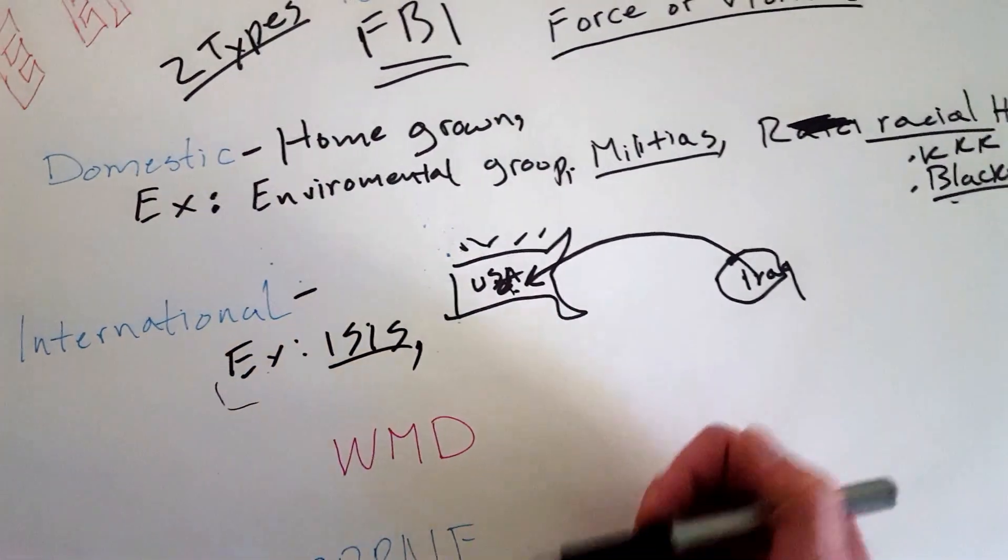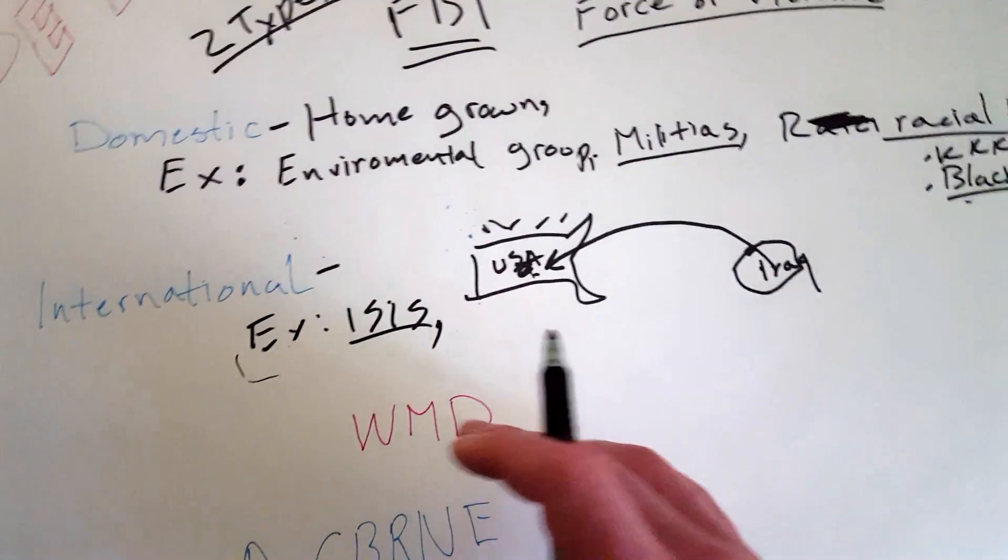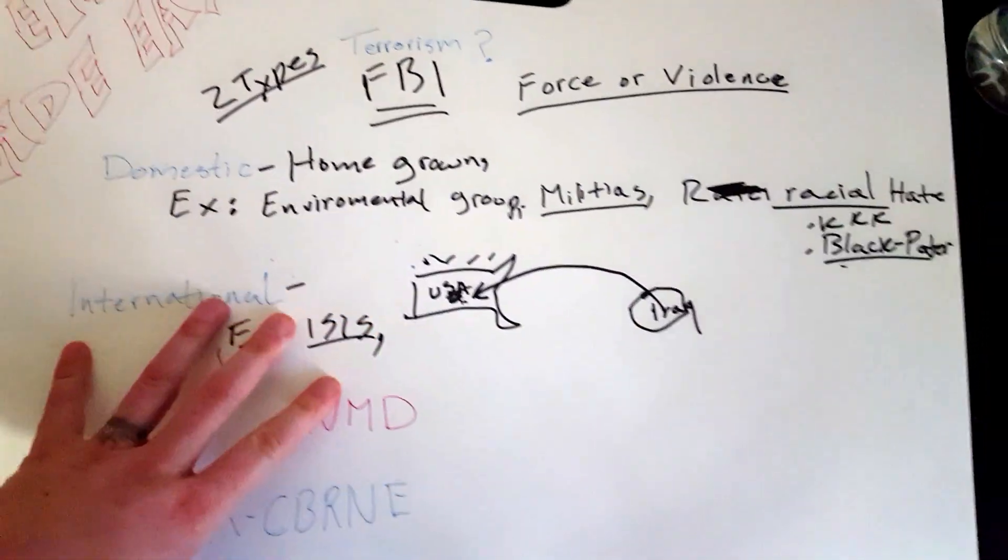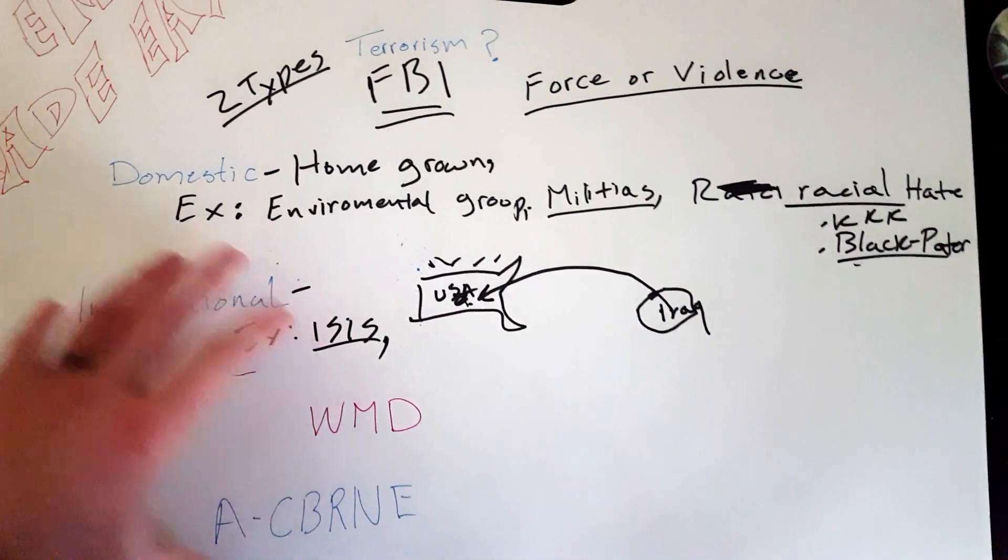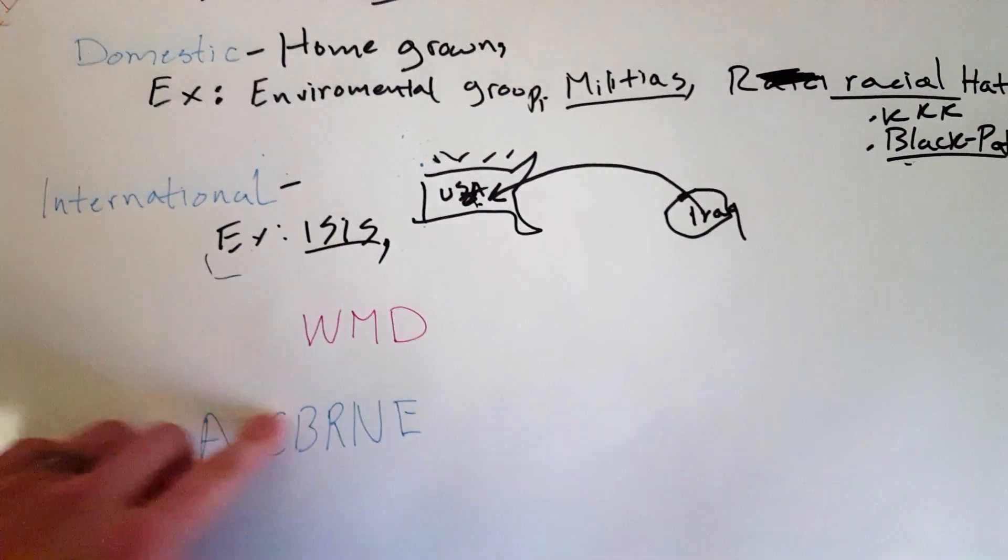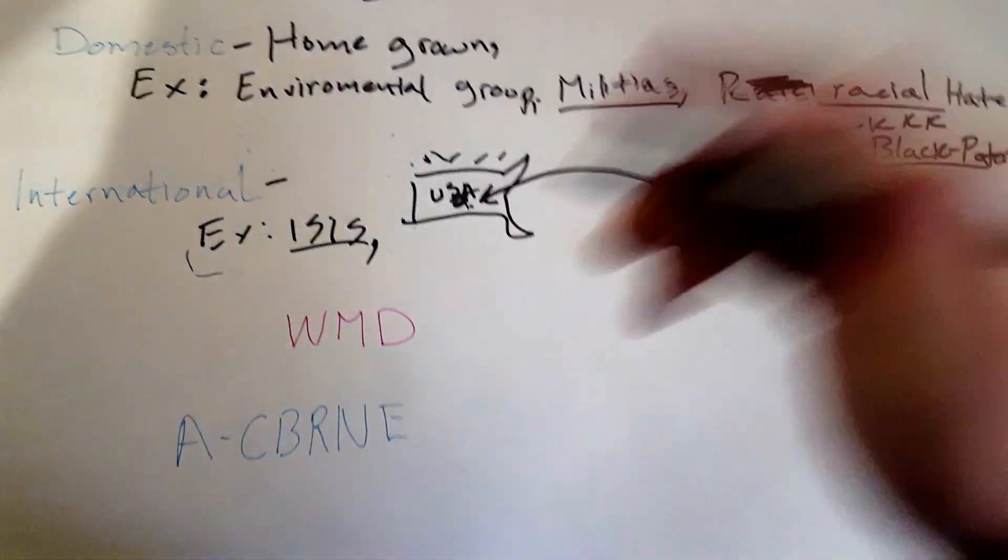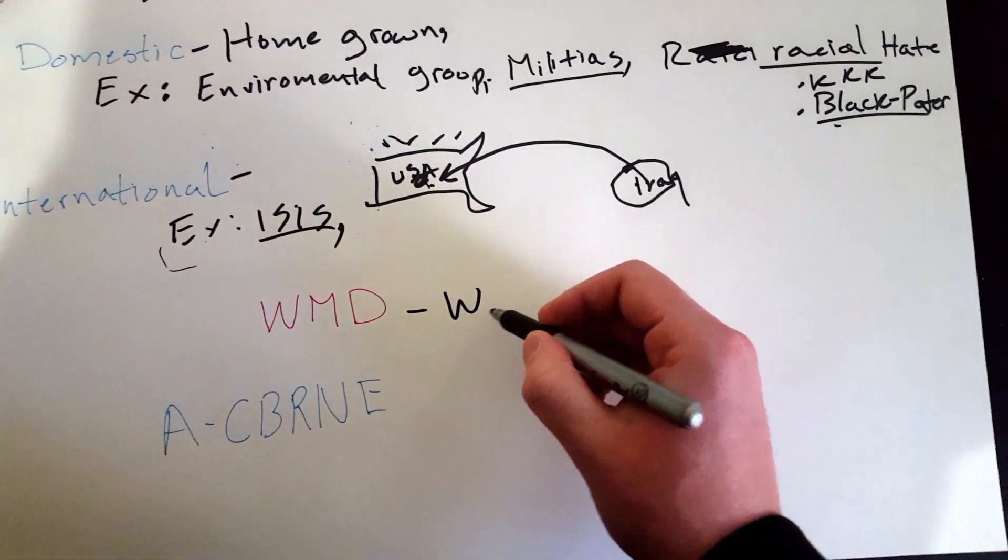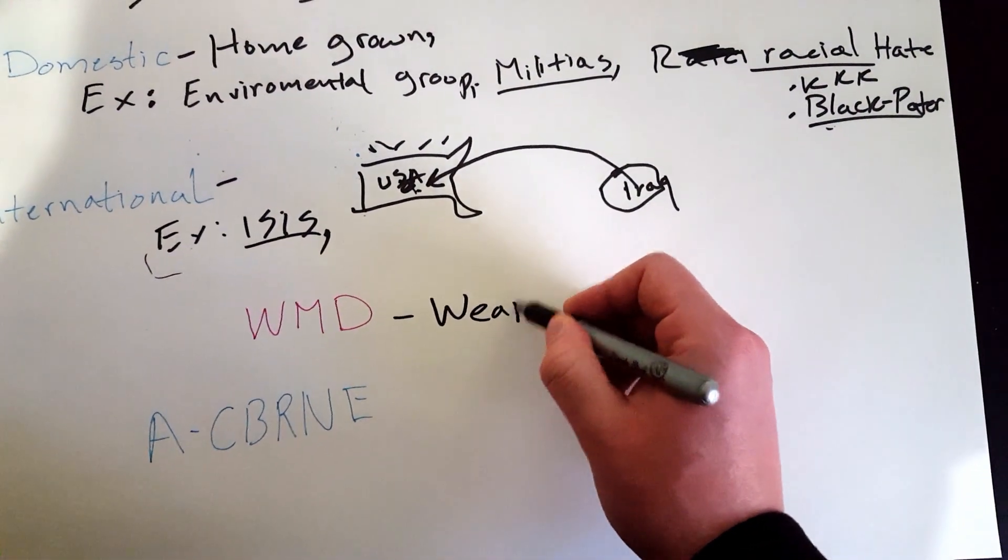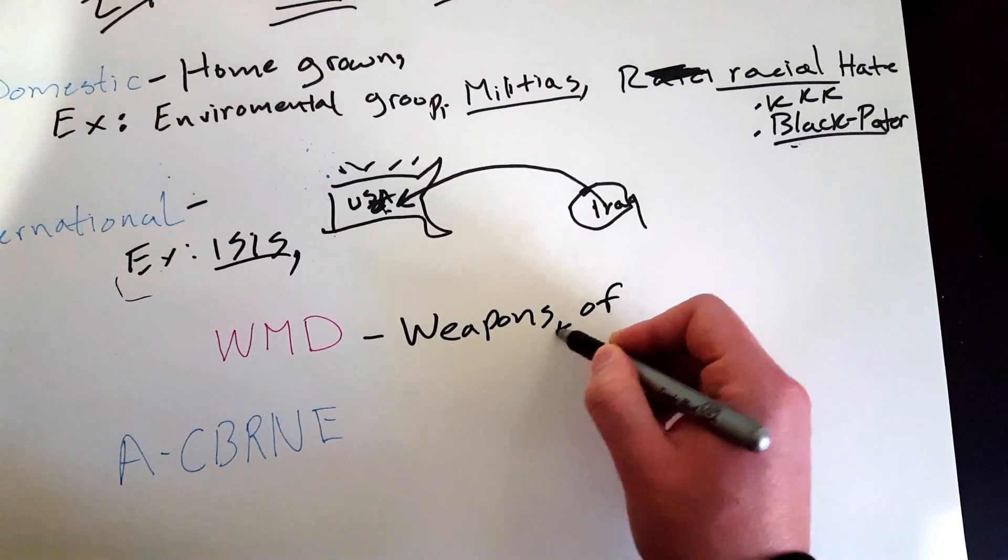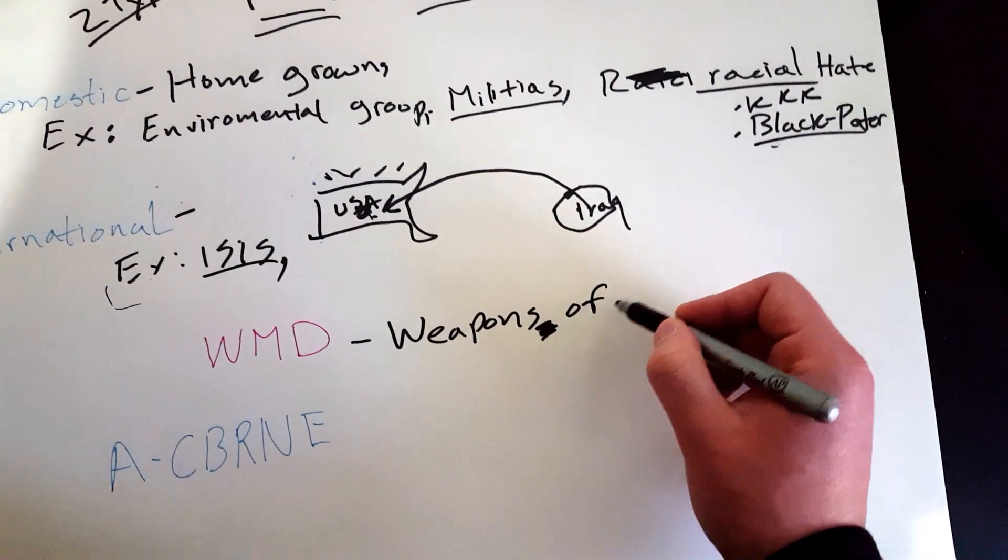As far as what they use, these groups use a whole bunch of different weapons to get their point across or to scare people—use force or violence. We call them weapons of mass destruction. So they can use weapons of mass destruction, which you'll see WMD for short. I don't know why I put that in there—like I said, I'm a little off. Weapons of mass destruction.